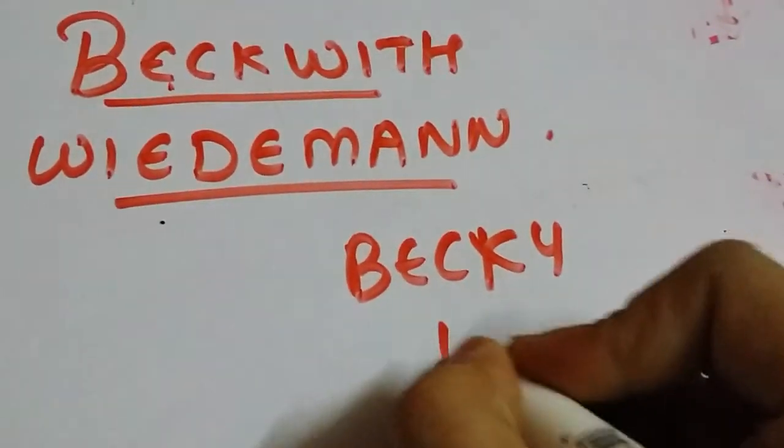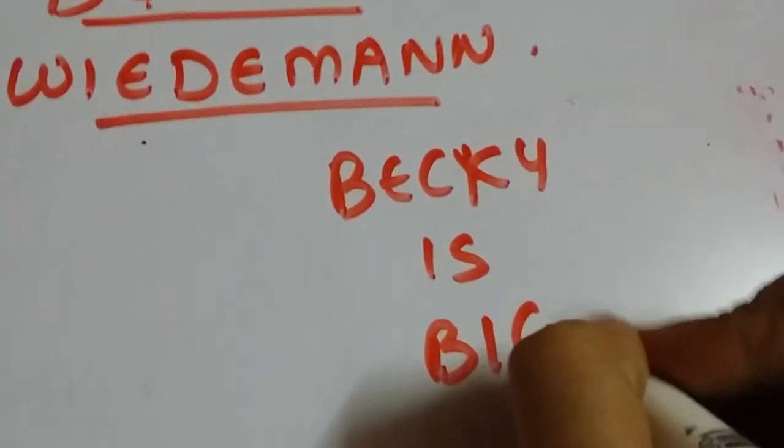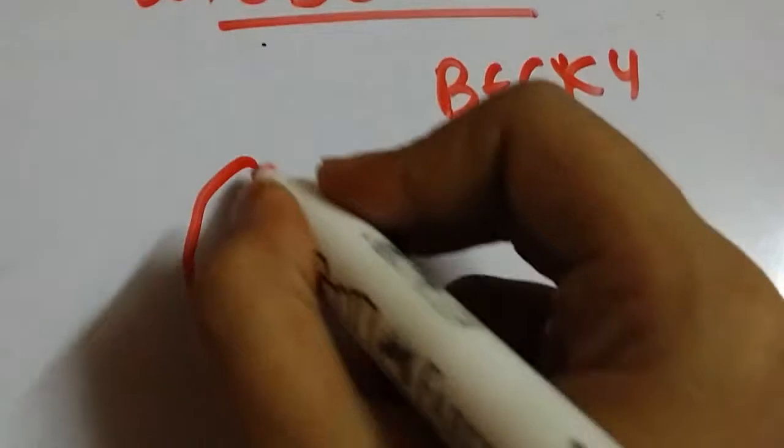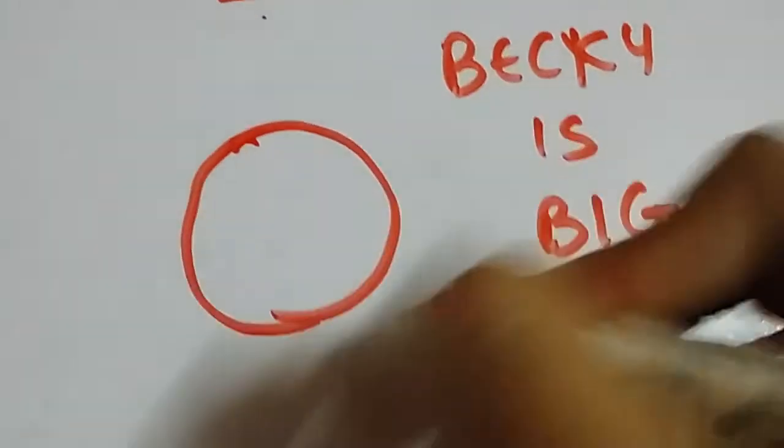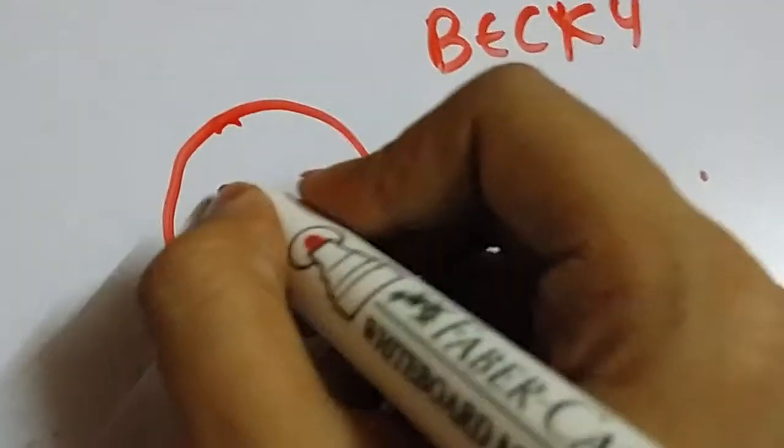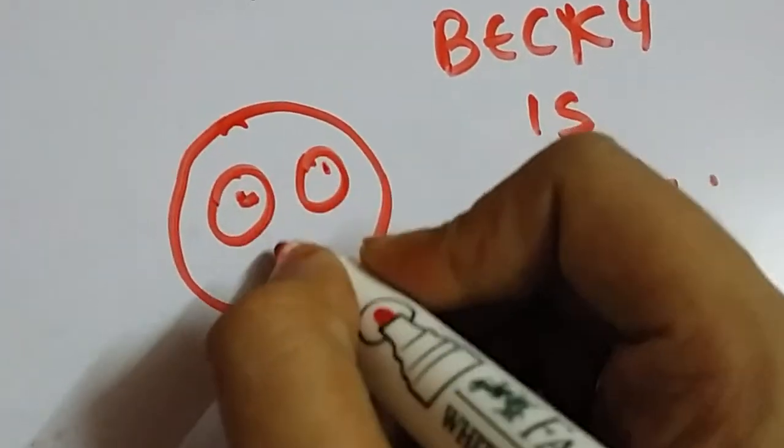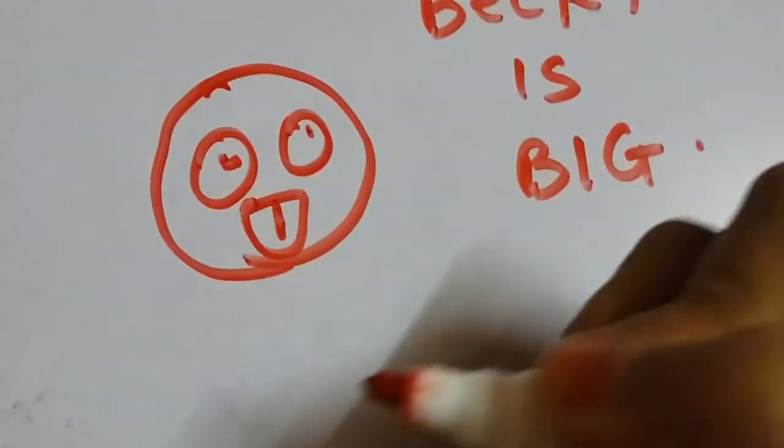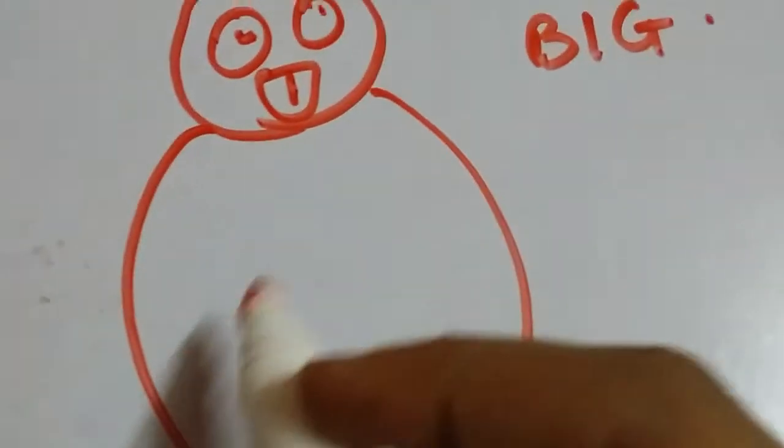Becky is big, so it's a baby who has a big head - that is macrosomia, a big protruding tongue - that is macroglossia, and a big body which has visceromegaly.